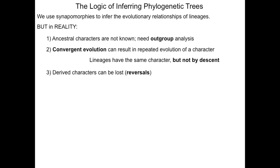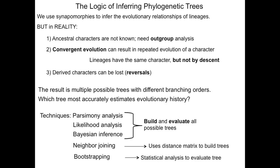However, in reality we do not know the ancestral characters for sure, and use some methods called outgroup analysis to infer those character states. Also, convergent evolution happens quite often — lineages independently evolve the same character state. And in addition, derived characters can be lost sometimes; reversals do happen. Because we do not know for sure the ancestral character states, and convergent evolution and reversals happen, there is uncertainty in whether given synapomorphies are true or not. For a set of species being analyzed, multiple trees can be drawn to explain the origins of the derived character states.